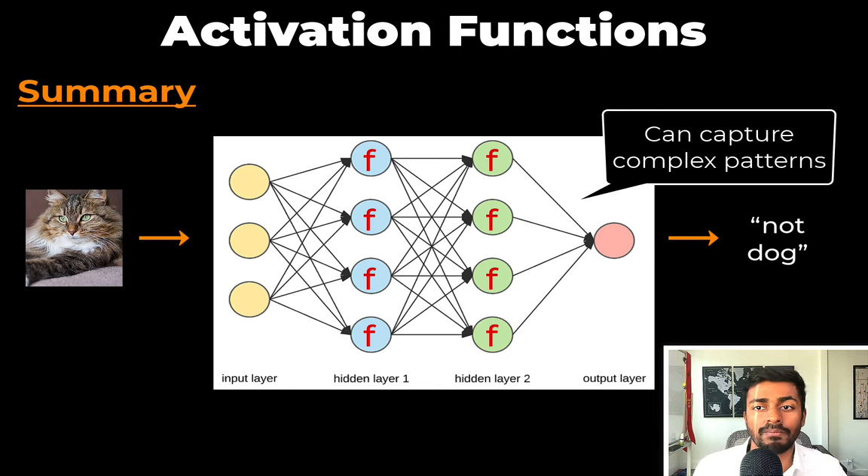But before we go, let's get to a summary. So activation function is a function that allows neural networks to pick up on complex patterns between inputs and outputs. Neural networks without such activation functions are relegated to linear regression in regression problems or linear decision boundaries in classification problems. In practice, overfitting with activation functions can be combated using dropout or a similar model architecture.